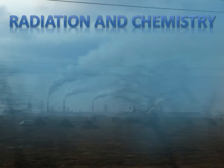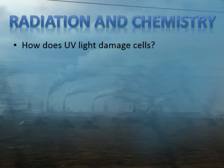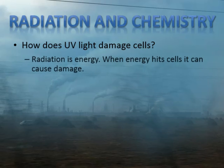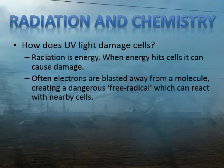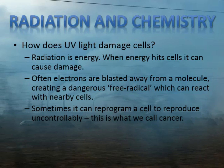So what happens to you when this radiation hits your skin? How does UV light do damage to organic systems? Well, radiation is energy, and when energy hits cells or the molecules that make up cells, it can damage them. Often electrons are blasted away from a molecule and that creates a free radical — there is an electric charge on the molecule, so it can react with nearby molecules and cells. Sometimes it can reprogram a cell — it can reprogram the DNA of a cell to reproduce uncontrollably. This is what we call cancer, when a cell just reproduces over and over and creates a growth that the rest of the body cannot survive.